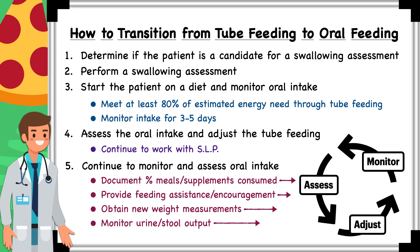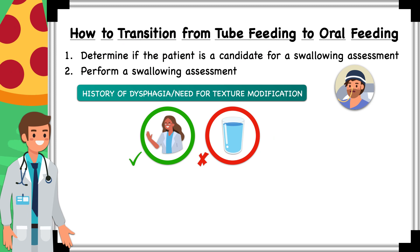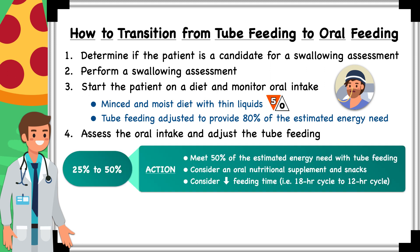Keeping Frank in mind, let's pretend we determine he's a good candidate for a swallowing assessment. Since he presented with dysphagia on hospital day one, now that he's more alert and following commands, he remains a candidate to be evaluated by the SLP instead of the three-ounce water swallow challenge. The SLP clears Frank for a minced and moist diet with thin liquids, he gets started on it that day, and the rate for the continuous tube feeding is adjusted to provide 80% of the estimated energy demand. After three days on the diet, Frank is found to be meeting an average of 40% of his estimated energy demand by mouth, so an oral nutritional supplement is added and the continuous infusion is switched to a 12-hour cyclic infusion providing 50% of his total calorie needs.